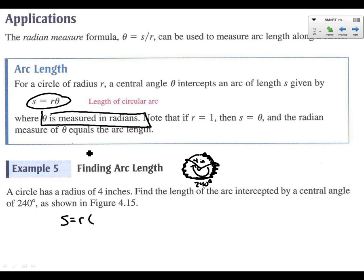S equals R theta. Well, R we know. That's 4 inches. And theta, we don't know because it's in degrees. So we've got to do a quick conversion. So 240 pi, let's go right into it and say pi over 180 degrees.